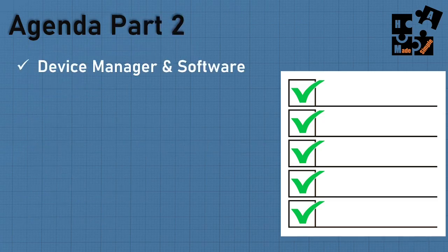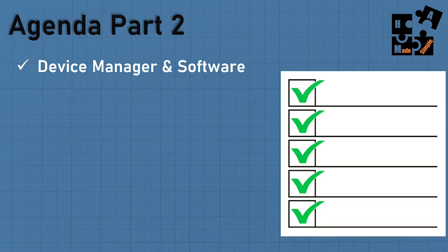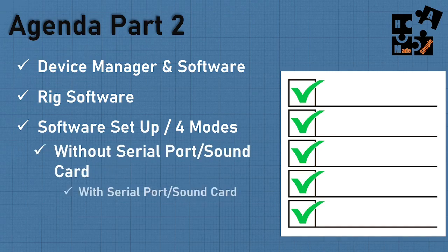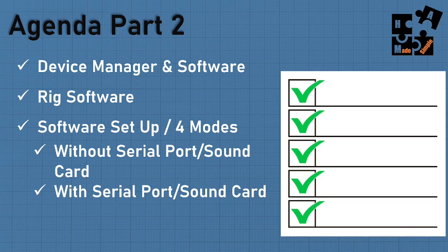I'll also go ahead and share the agenda for part two, which will be more hands-on — less PowerPoint, more screen capture walking through the software programs. I'll do device manager setup, show you a trick you need to do under the view section to find hidden ports. I'll cover rig software for external sound cards, software setup in the four modes — both without a serial port and with a serial port — and summarize the differences between the two.